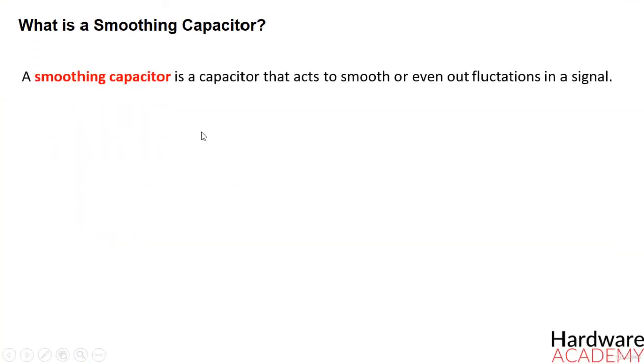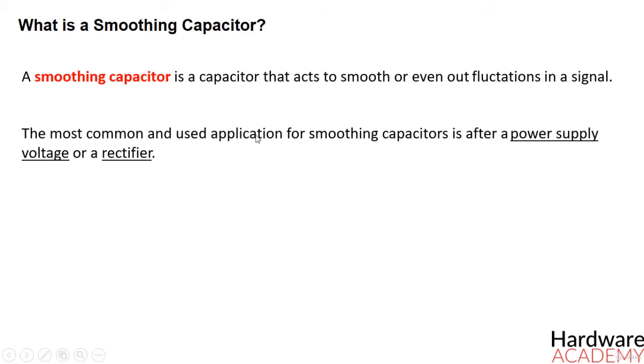It's nothing else but a capacitor that acts to smooth or even out fluctuations in a signal. The most common and used application for smoothing capacitors is after a power supply voltage or a rectifier.